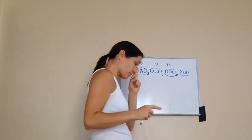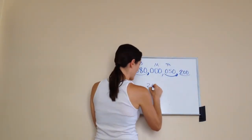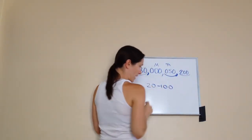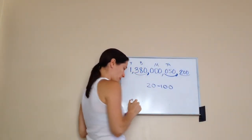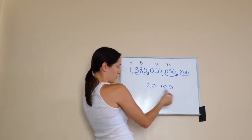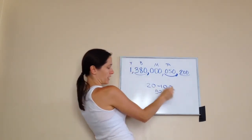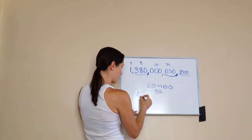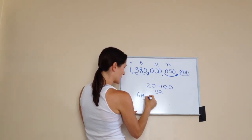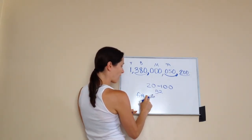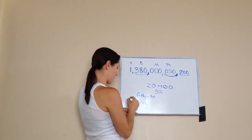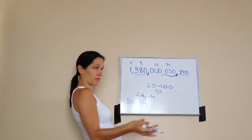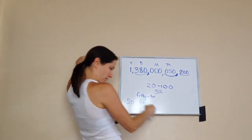One more quick thing: a number from 20 to 100 that doesn't end in zero — we're going to put a hyphen in. For example, 52 is in between 20 and 100, so I would write fifty-two with a hyphen. Now, obviously we don't do that for ones that end in zero, like 50, because there's not a 50-dash-something. But any number between 20 and 100 that doesn't end in zero, we have to use hyphens.